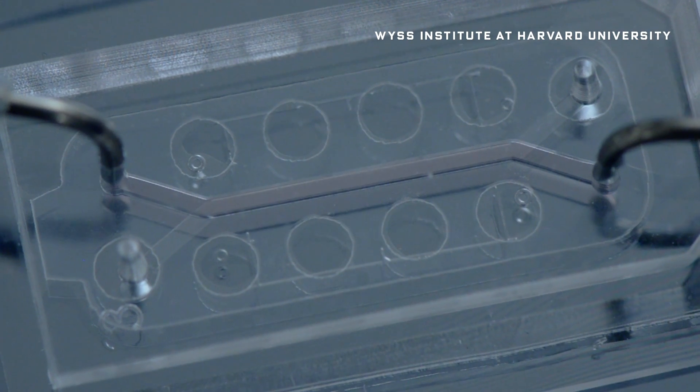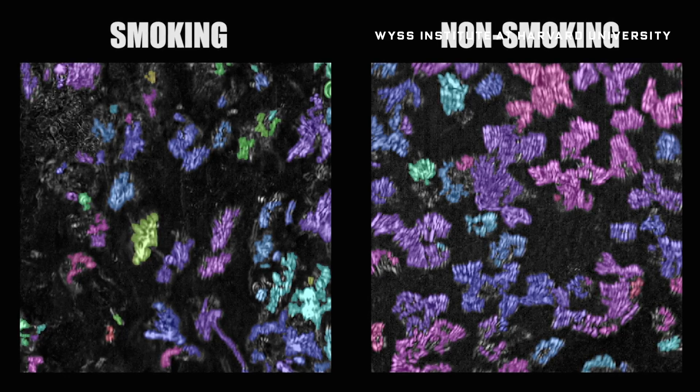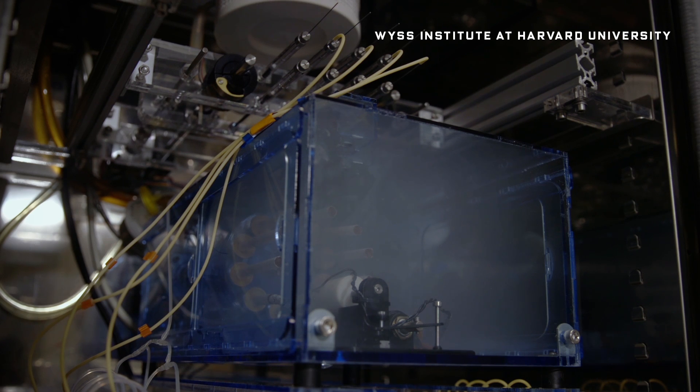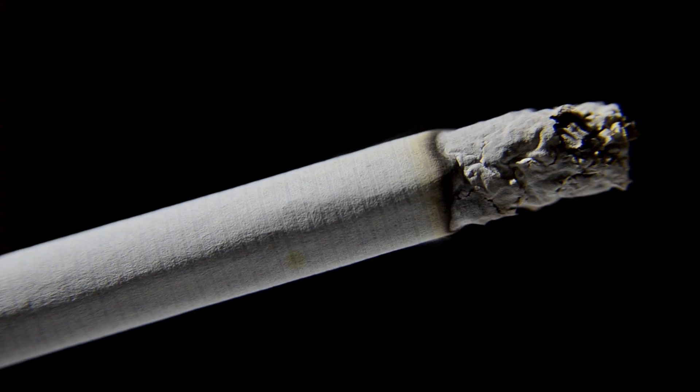By loading up the lung chips with either cells from a patient with lung disease or a non-smoker, the scientists can see how smoke affects each differently. Their findings could lead to new treatments for sufferers of COPD and do away with the old method—sick rats in a box of smoke. So huff away, little one, and do mind the ash.